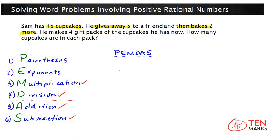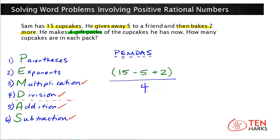He starts with fifteen, gives away five, then bakes two more. This will tell us how many cupcakes he has for his gift packs. So if he starts with fifteen, I'm going to write the number fifteen. He gives away five — we represent that with subtraction. And then he bakes two more, which means he adds two. Now let's come to the second part: if he wants to make four gift packs, how many cupcakes can go in each pack if he divides them up evenly? We take this entire expression and divide it into four gift packs.